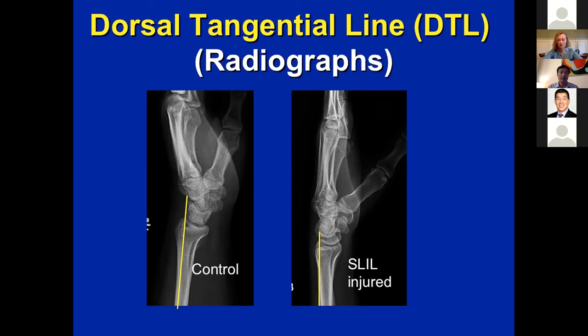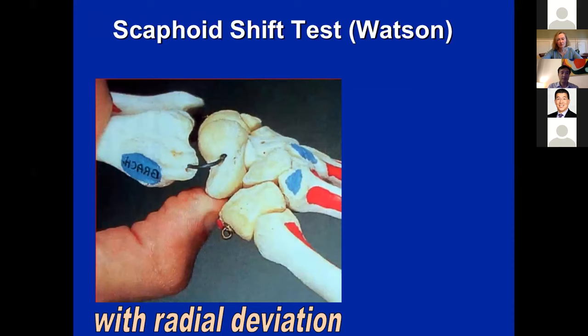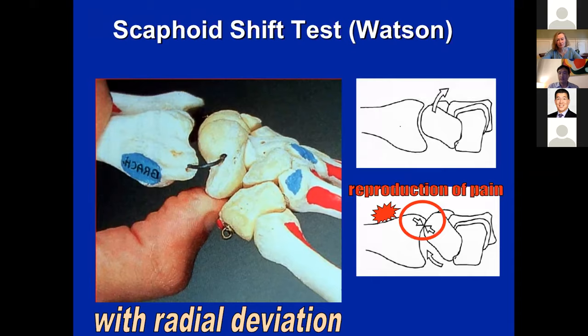This is analogous to the scaphoid shift test, which is a dynamic physical exam maneuver — when you push on the distal pole, you kick that scaphoid out. In some patients when it's more extreme, the scaphoid sits there statically displaced, which causes pain. This is also relative to how patients do post-op.